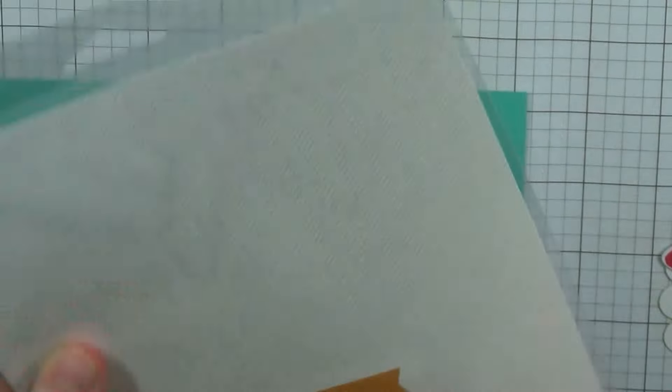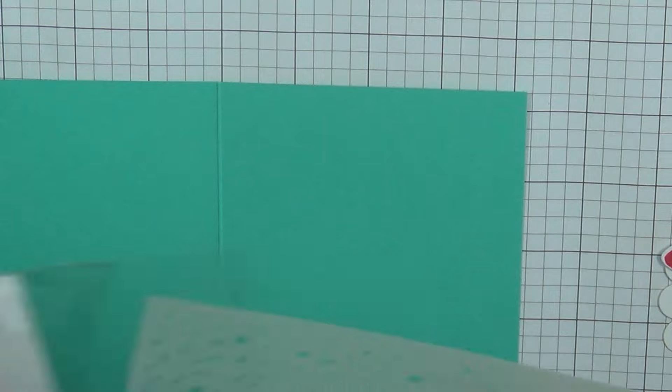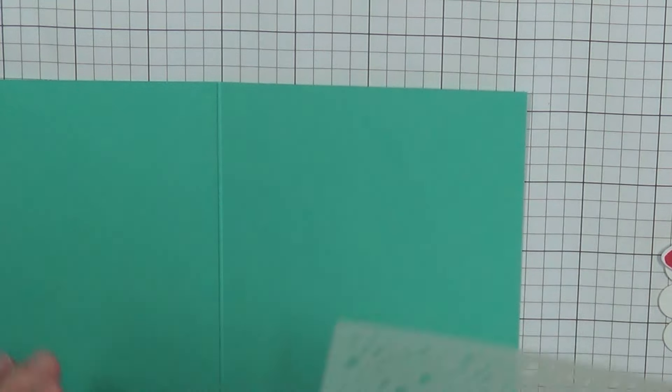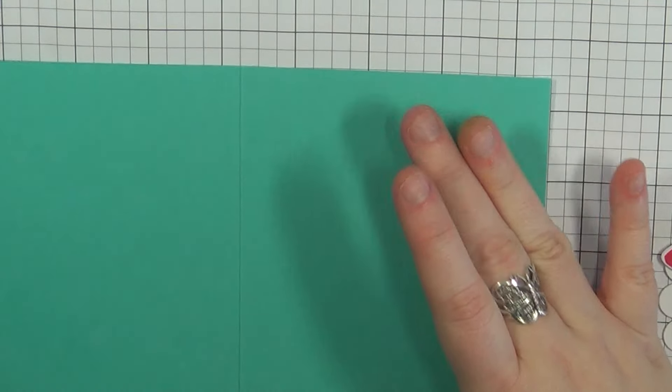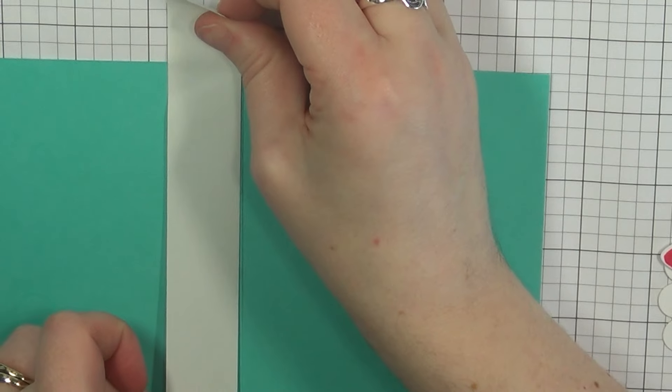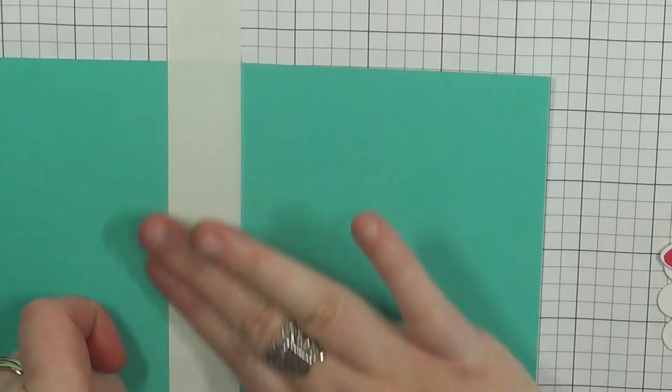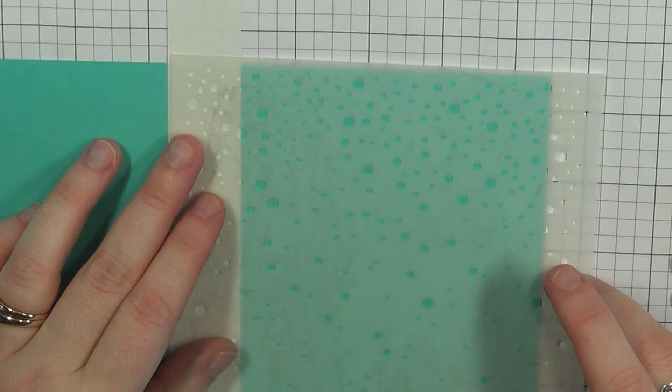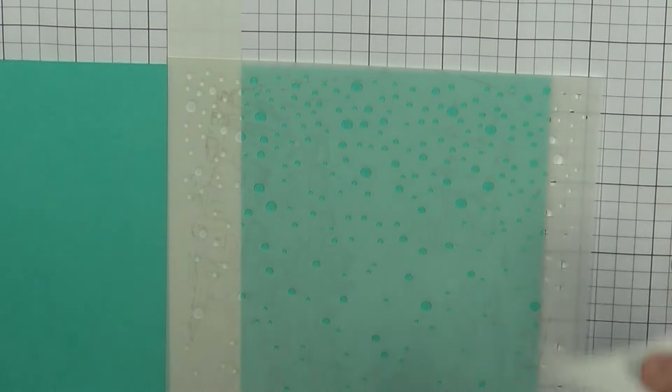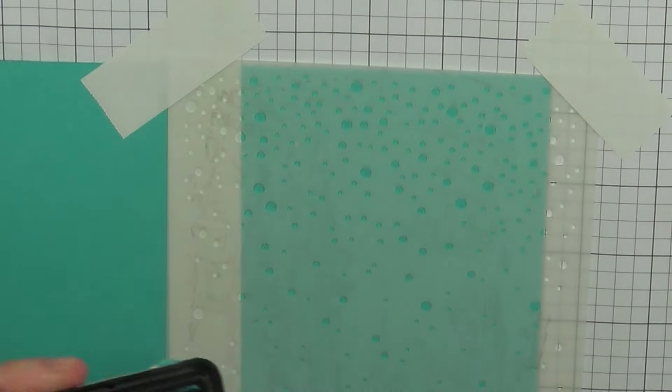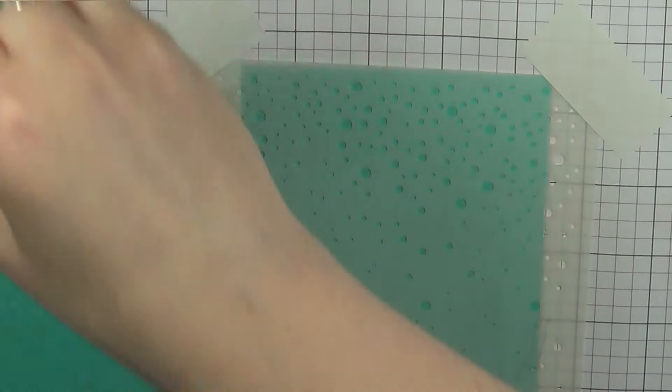So I thought I would go ahead and add a little bit of texture to my card base for today. This card stock is from Simon Says Stamp and I am going to take this stencil also from Simon Says Stamp. This is a Falling Snow stencil and I'm just going to place some post-it tape kind of on the edge there so it'll protect part of the back of the card and I'm going to take this ink here. This is Peacock I believe from Lawn Fawn.